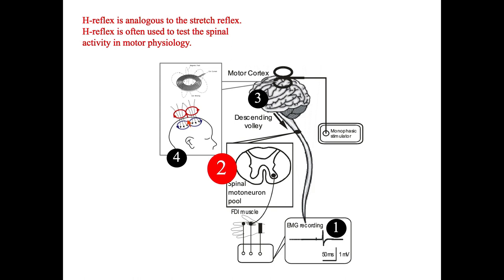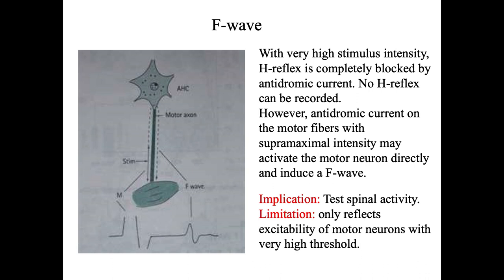There is a limitation for H-reflex: it is sometimes very difficult to record from a hand muscle. As a replacement, we can do an F-wave experiment. The mechanism behind the F-wave is that when we use very high stimulus intensity, the H-reflex can be completely blocked by the antidromic current. At that time, no H-reflex can be recorded. But at the same time, the antidromic current on the motor fibers — with what we call supramaximal intensity — can activate the motor neuron directly and induce a wave. This is named the F-wave.